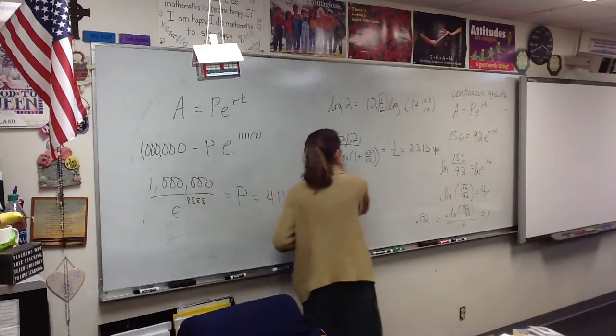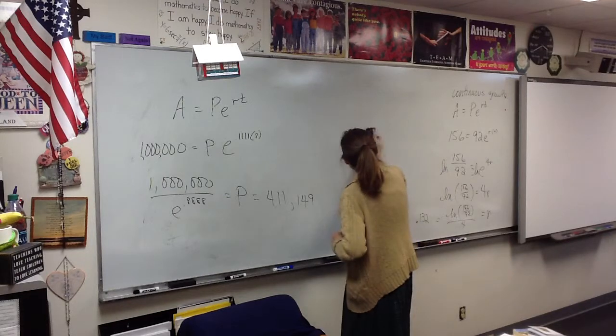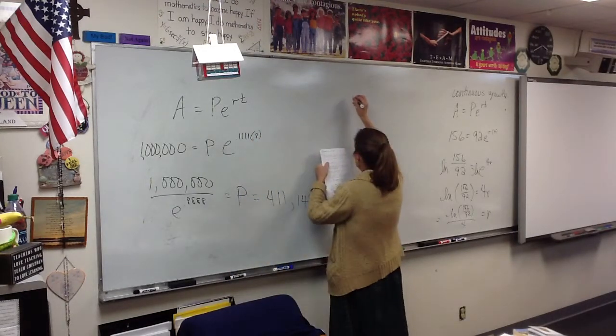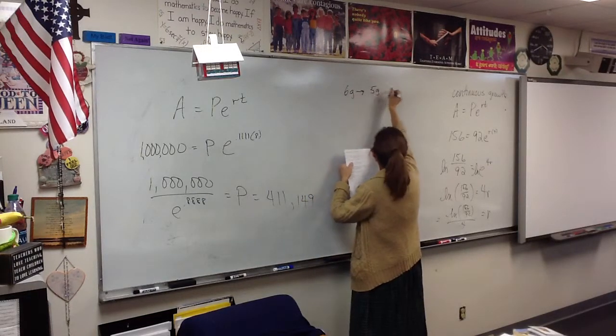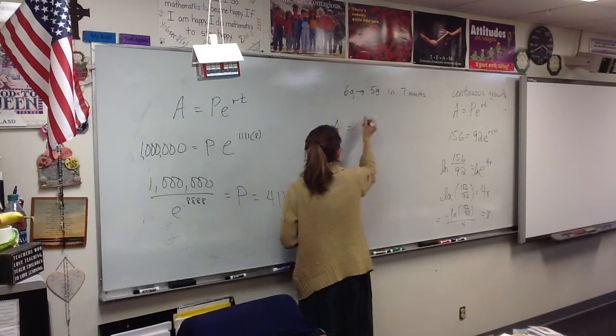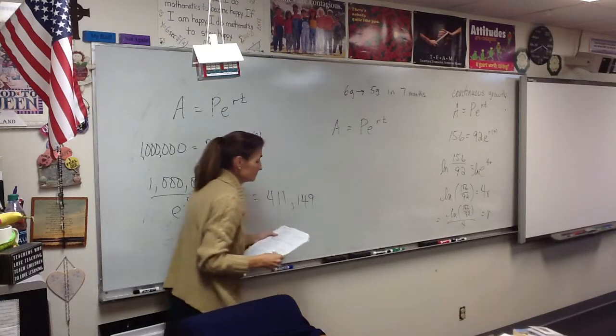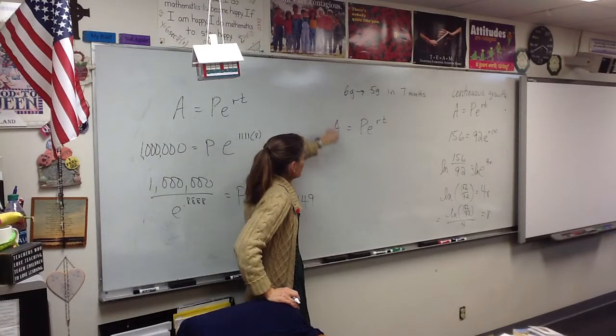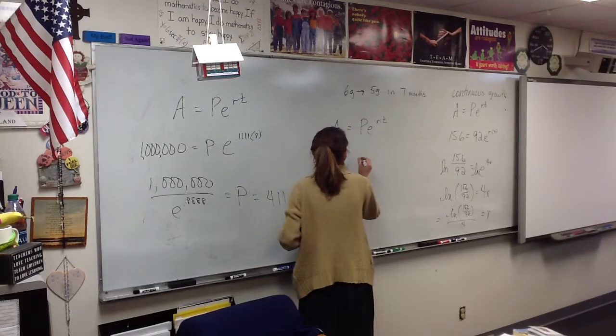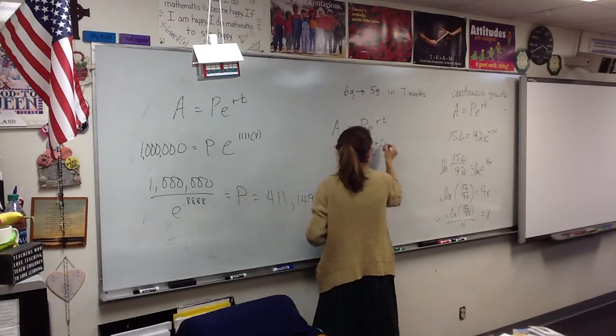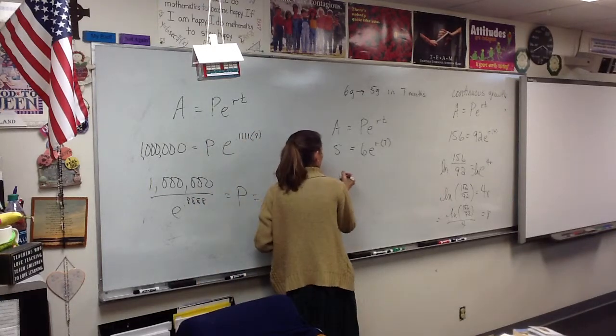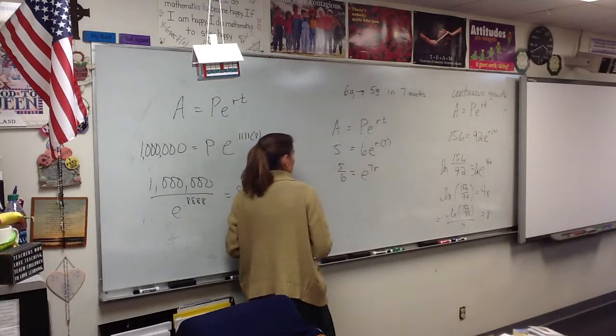Now PERT can be used in half-life situations also. Because half-life is a naturally occurring thing. So let's look at number two. Six grams goes to five grams in seven months. Okay, wait a minute. I'm just going to start with that. Could you plug numbers in to PERT? Do you know what to do with the six, the five, and the seven? Okay, where does the six go? P. P. Where does the five go? A. And T is seven? Can we solve that equation? All right, let's do it. Let's go ahead and solve it. What would be step one? Go ahead. Divide. Always divide first, always. What's step two? LN both sides.